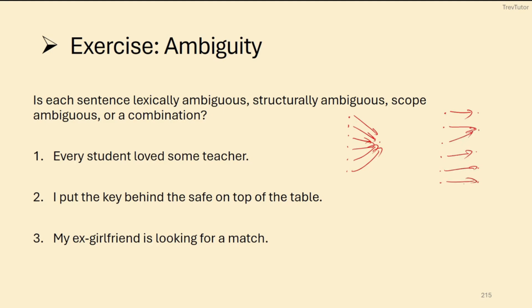Either every student individually loves some teacher or other, or there's a particular teacher that every student loves. And this is your example of scope ambiguity.